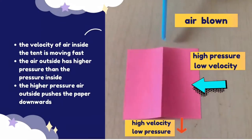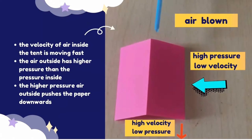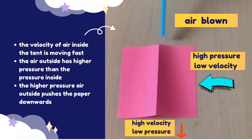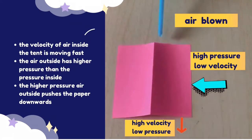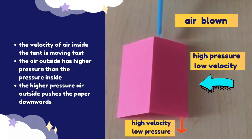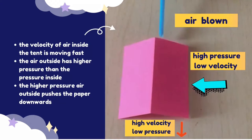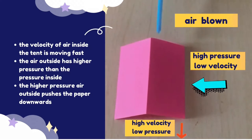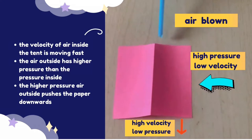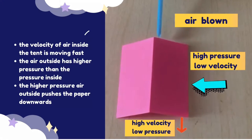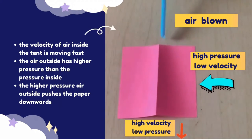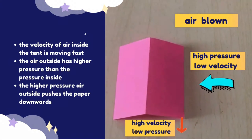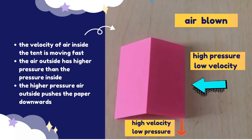The tan paper experiment: when the air is blown through the straw, the velocity of air inside the tan is moving fast. According to Bernoulli's principle, the higher the velocity, the lower the pressure. Therefore, the air outside has higher pressure and low velocity. Thus, the higher pressure outside pushes the paper downwards and causes the paper to collapse.